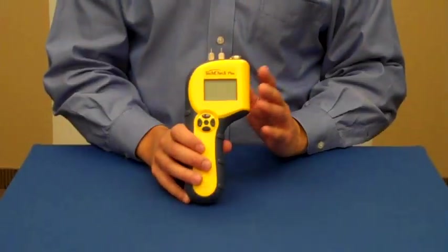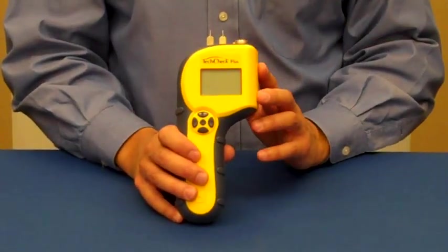Having a moisture meter lets you identify water damage, allows you to check how the drying is progressing, and sign off with confidence that the structure is dry and the job is done right the first time. The TechCheck Plus allows you to do this quickly and easily.